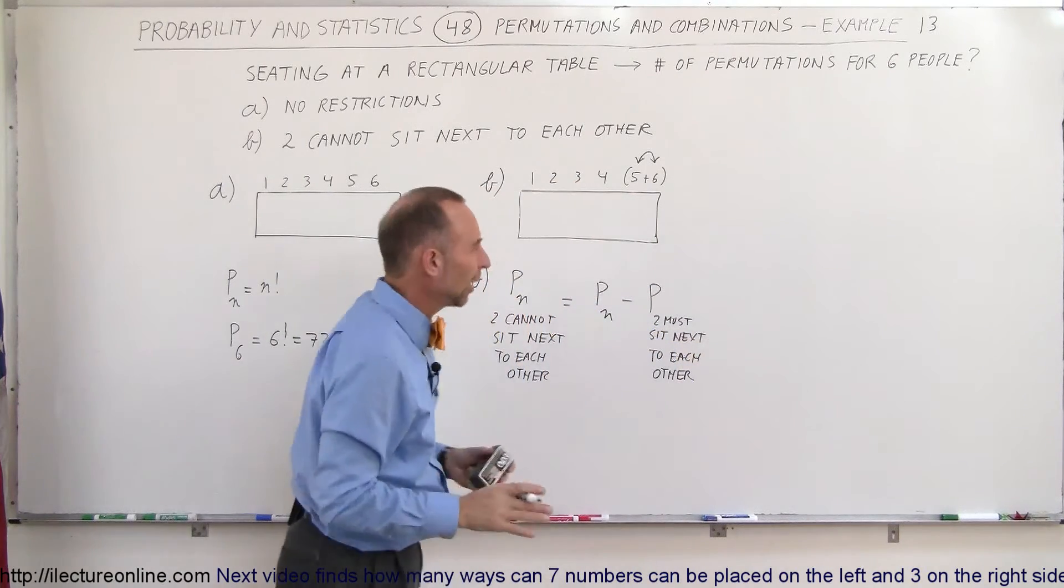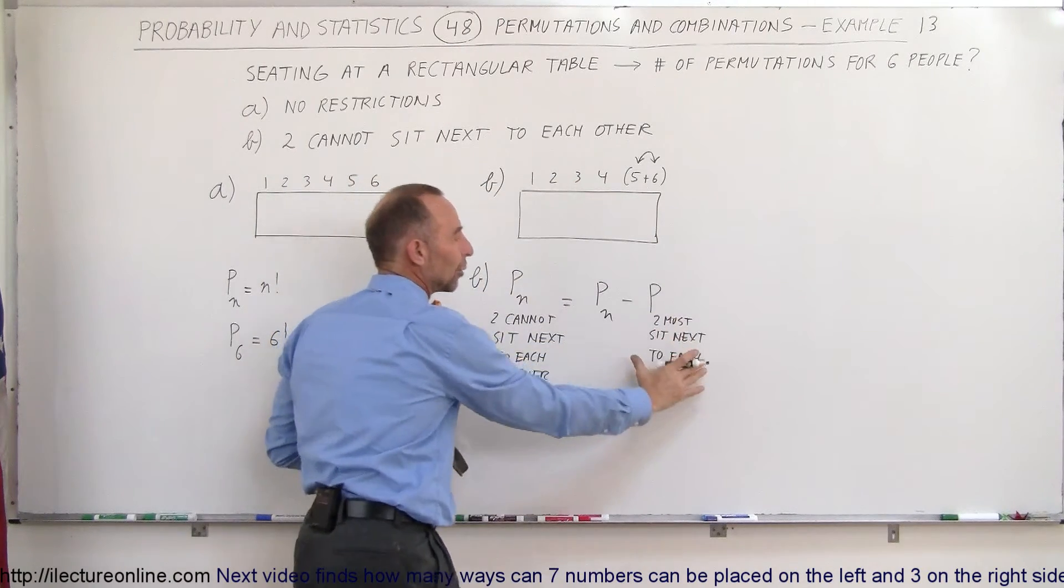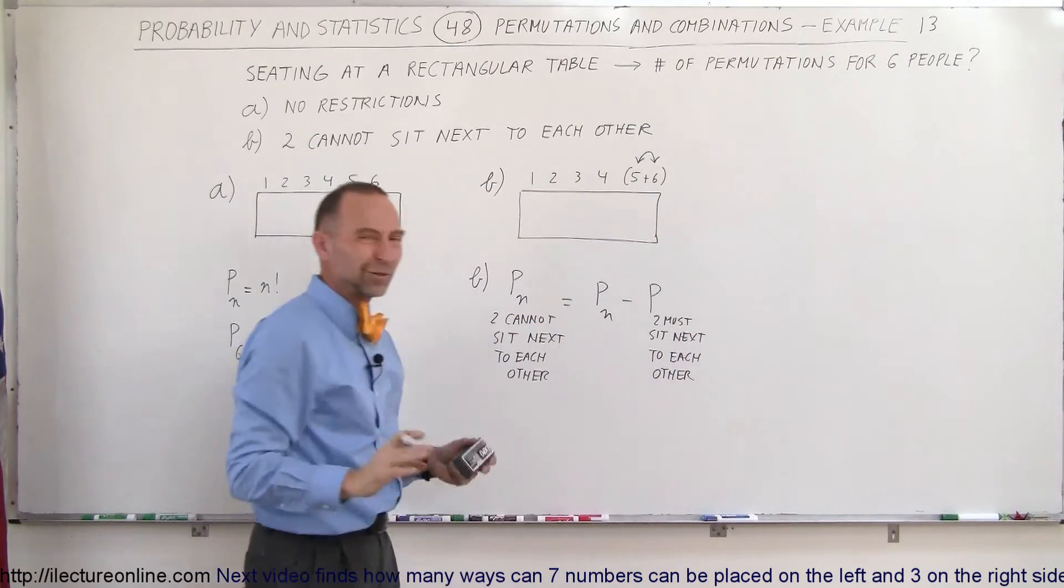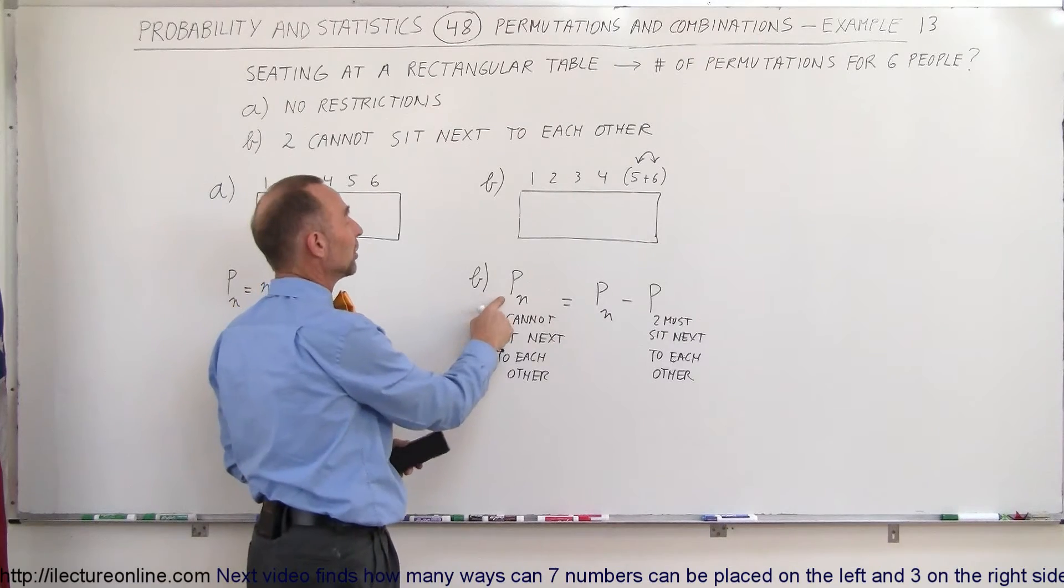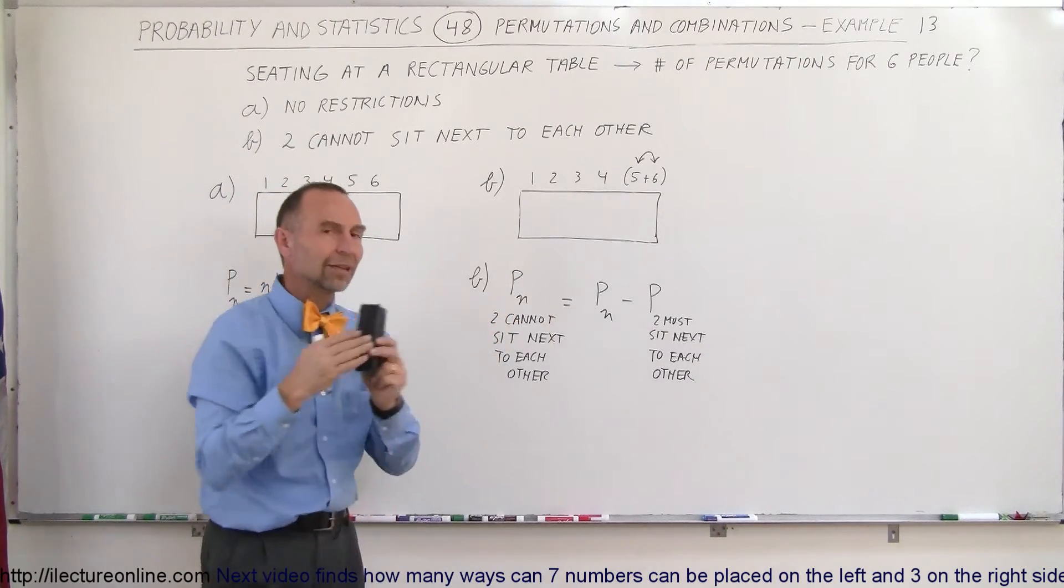The reason why I drew the board like this is because the way we're going to find this is by using this concept right here. I got a little ahead of myself, but bear with me. Here we're going to find the number of permutations where two people are not allowed to sit next to each other.